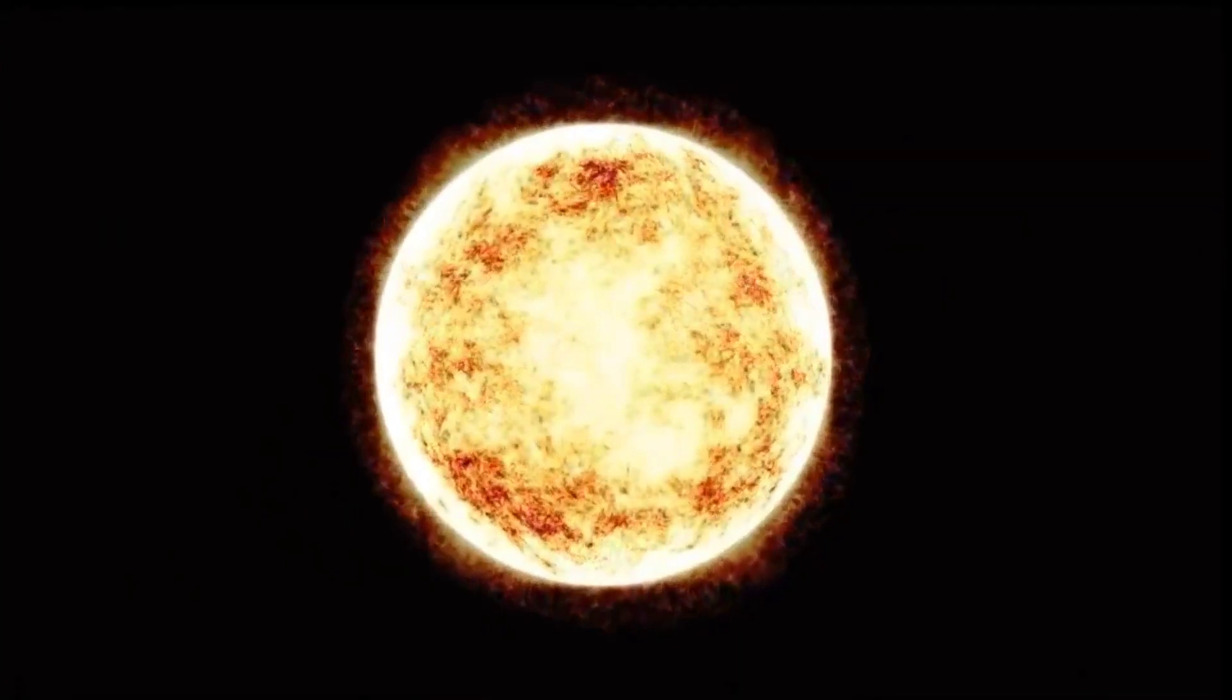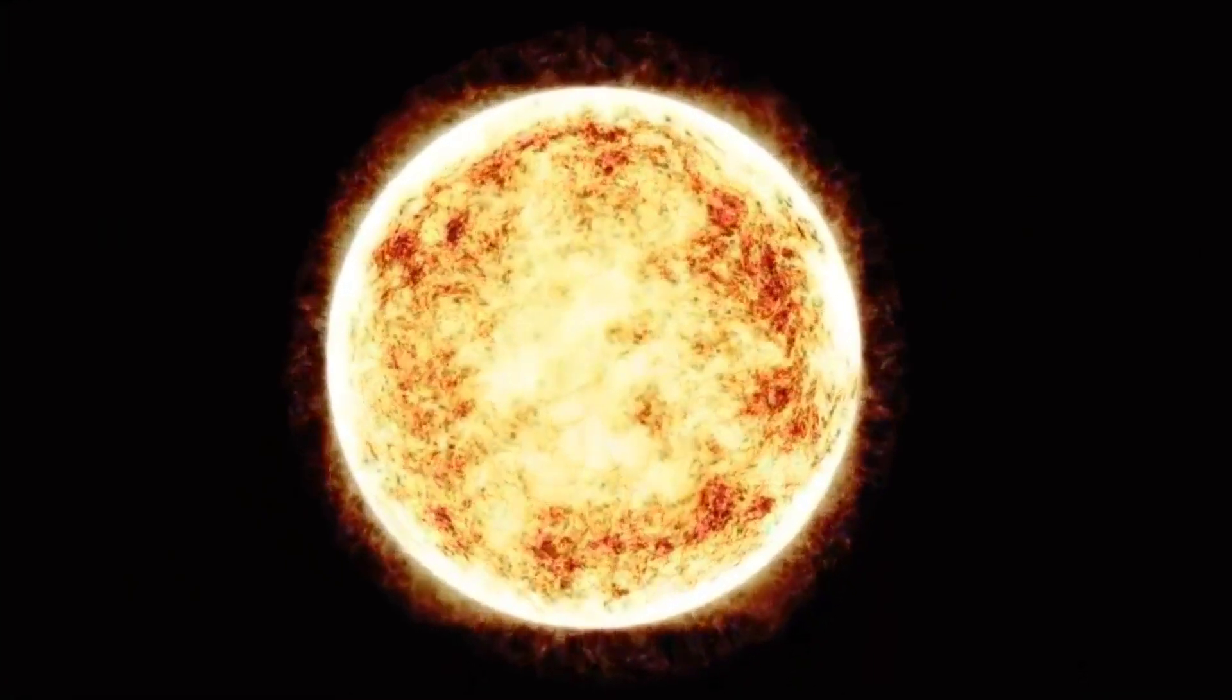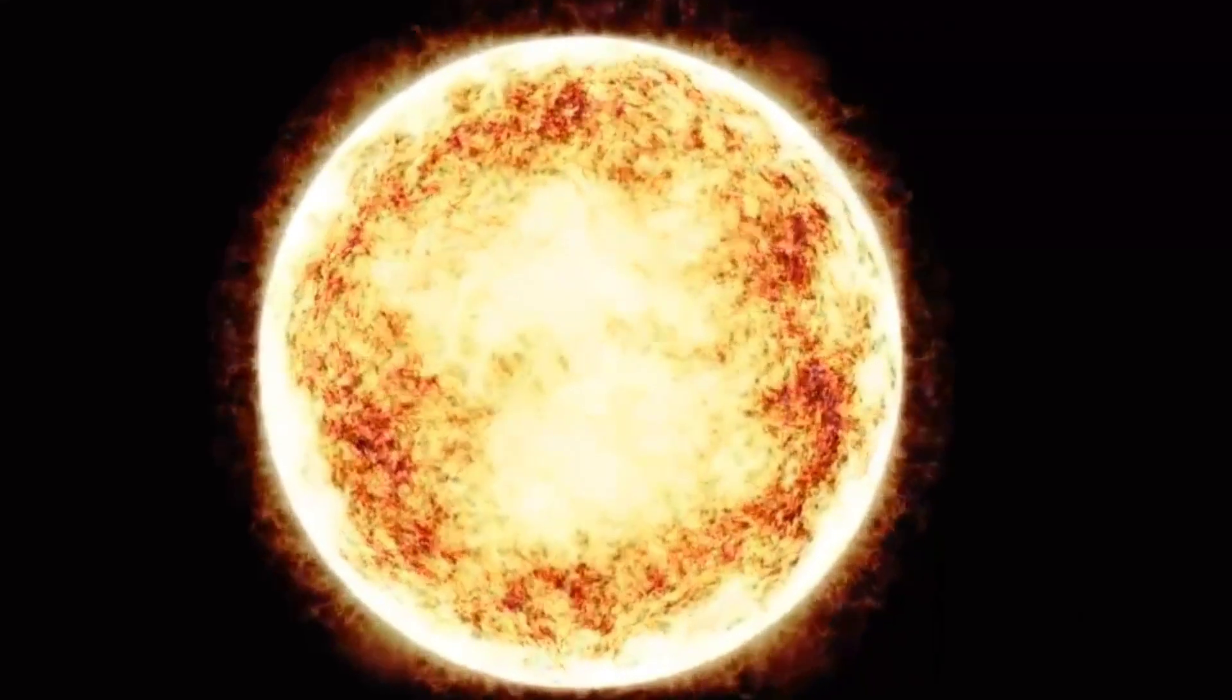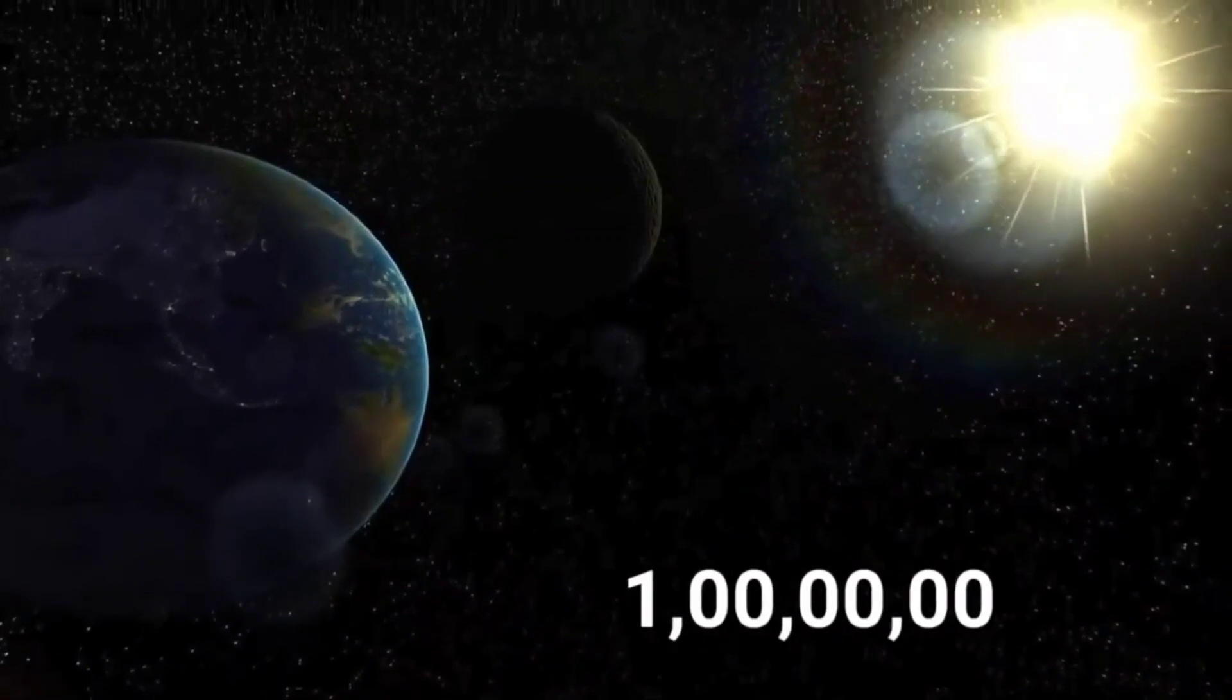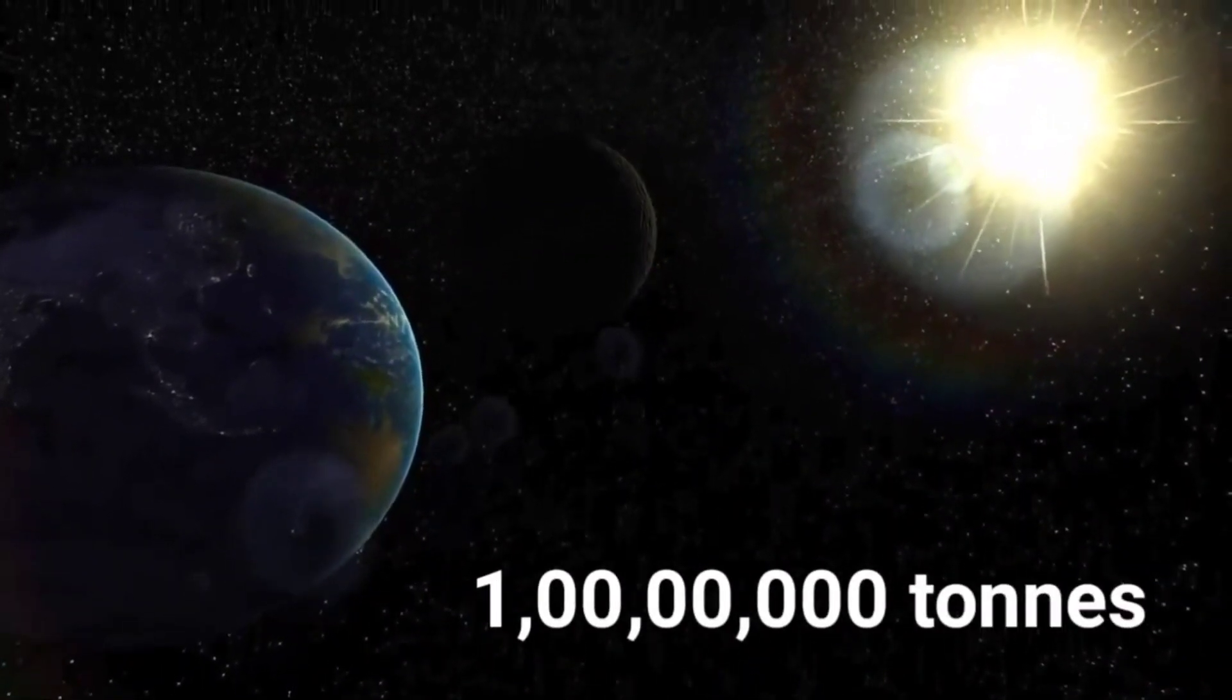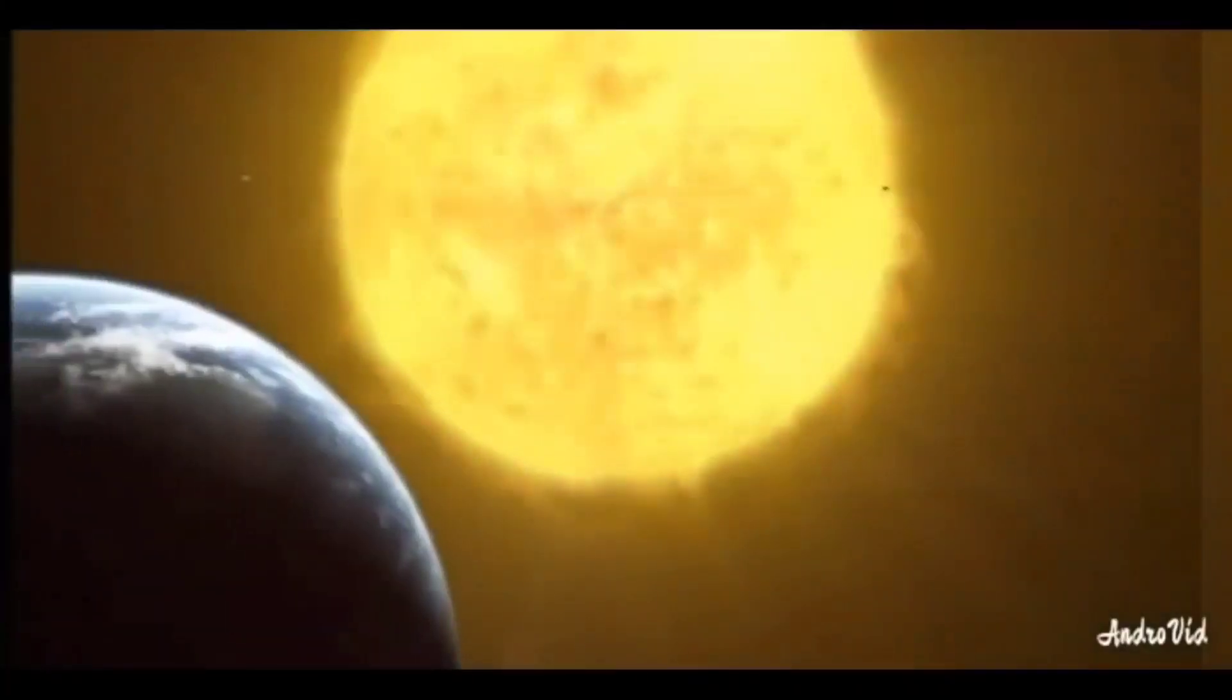If the exploded star's size is small, then it turns into a neutron star with high density. The density is super high that one teaspoon weight of this star would be equal to 10 million tons weight on the earth.